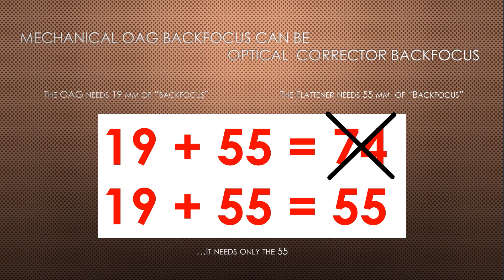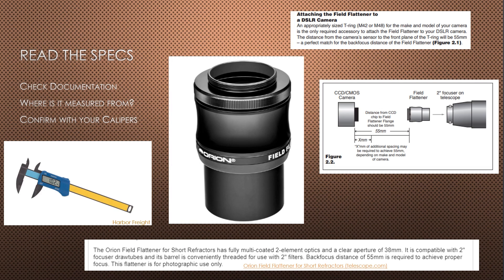Some people ask how to reconcile the different back focus requirements of the off-axis guider and the correcting optic — this represents a fundamental misunderstanding. There is no need to add the back focuses together or convolve one with the other. The first thing to do is determine the precise distance you need from the specifications of the additional optic, usually expressed as something like 55 millimeters plus or minus 1 millimeter. Don't forget to adjust for any filter you may be inserting, and remember not all optics have specific requirements.